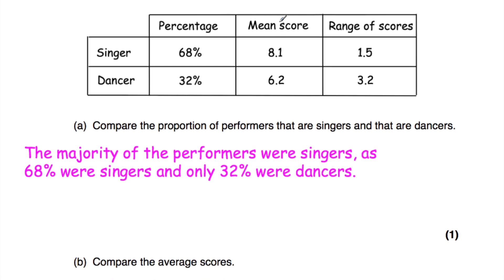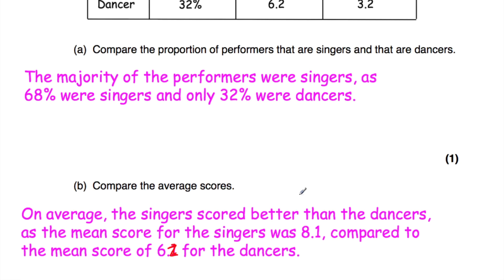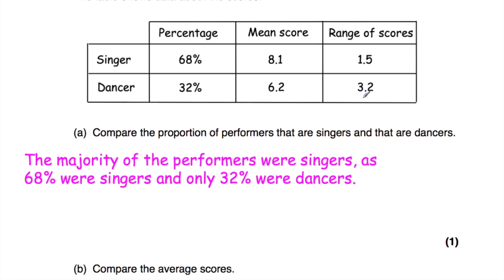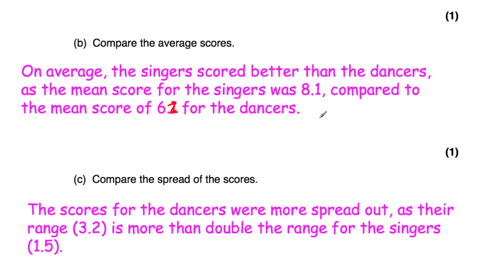Part (b) asks us to compare the average scores. The mean score for singers is 8.1 and for dancers is 6.2, so on average the singers scored better than the dancers. Part (c) asks us to compare the spread of scores. The range for singers is 1.5 and for dancers is 3.2, meaning the dancers' scores are more spread out. In fact, the dancers' range of 3.2 is more than double the singers' range of 1.5.